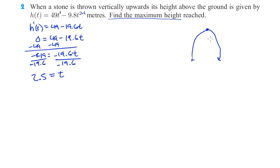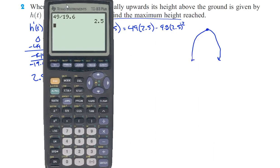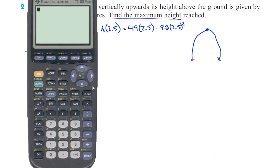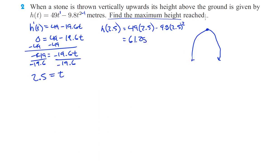So H at 2.5 seconds is going to be 49 times 2.5 minus 9.8 times 2.5 squared. Let's make our life easy and do this on the calculator. The height at 2.5 seconds is going to be 61.25 meters. So the max height of that stone is going to be 61.25 meters.